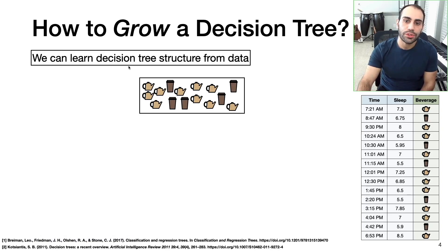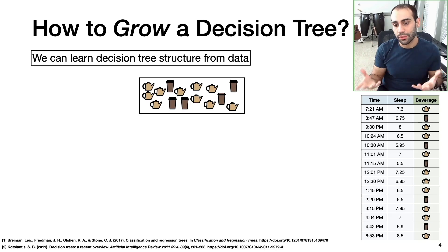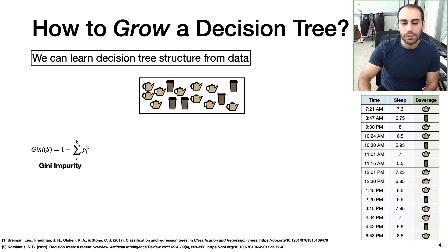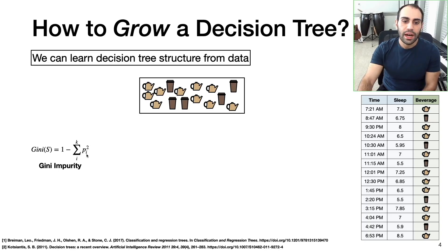We can use decision trees in practice by developing them from data. Put another way, we can learn decision tree structure from data. I'm going to walk through an example to give you a qualitative sense of how this works. Before getting into it, I need to introduce the concept of Gini impurity. I'm throwing the equation up here for completeness — the Gini impurity of a sample S is equal to 1 minus the sum over pi squared, where pi corresponds to the probability of the i-th class.